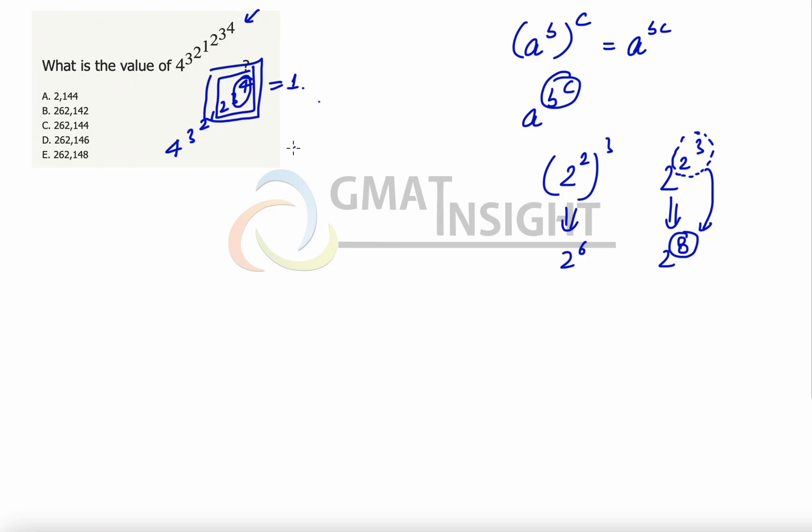Which means this question is same as 4^3^2^1, because 1 to the power anything eventually is going to be 1. This can further be written as 4 raised to the power 3 squared. 3 squared is 9, so this part becomes 2 squared raised to the power 9, which can further be written as 2 raised to the power 18.